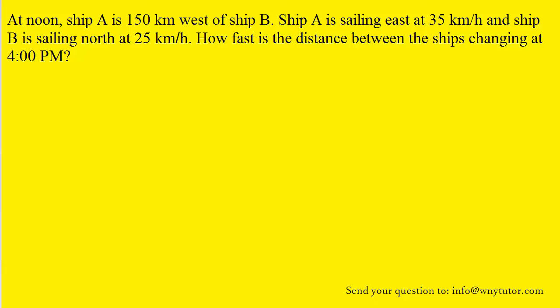As always, if you haven't done so, please pause the video and try the question on your own before moving on. We're going to go ahead and draw a picture of the ships. The question states that ship A is initially 150 kilometers west of ship B, and that's what we've shown here.